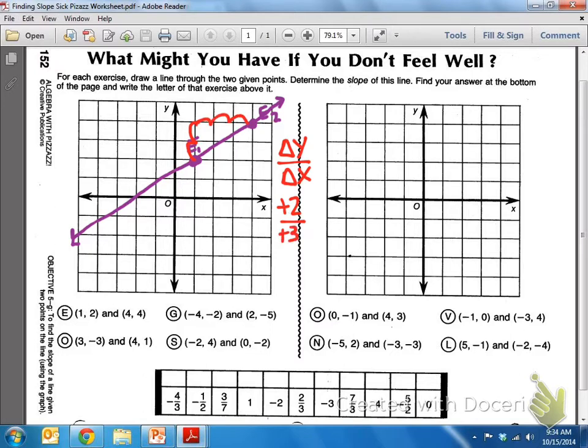So positive 2 over positive 3, I can't reduce the numbers, and since they're both positive, we'll just write 2 thirds. And then if it's 2 thirds, I go down to my chart here and write the letter E above 2 thirds.